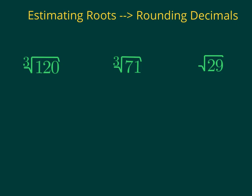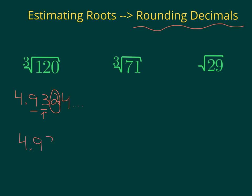Now, instead of estimating without a calculator, we're going to use a calculator to round decimals. If you take the cube root of 120 on your calculator, you'll get 4.9324 and it goes on forever. We are going to round to the nearest hundredth. Count to the tenths, hundredths, then the digit after tells you what to do. The 2 tells you to keep the 3 the same, so 4.93 is the estimation of the cube root of 120.